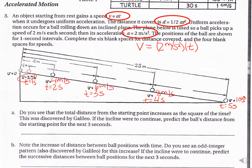Now for the distance equation: distance equals one-half times acceleration times time squared. One-half times 2 gives us 1, so our equation simplifies to just time squared. At 2 seconds: 2 squared equals 4 meters total. We'd already gone 1 meter at the 1-second mark, so 4 minus 1 gives 3 meters between second 1 and second 2. The total displacement is 4 meters. At 3 seconds: 3 squared equals 9 meters total; 9 minus 4 gives 5 meters for that interval.